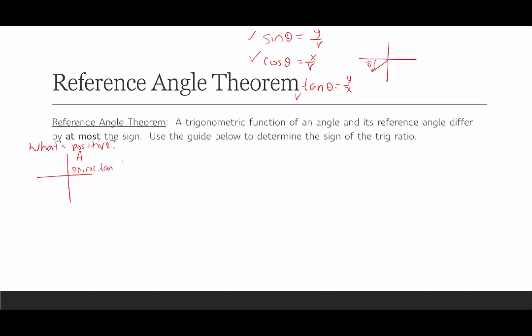Moving to quadrant 2: x is negative, y is positive. Sine is y over r, which is positive. Cosine is x over r, which is negative. Tangent is positive over negative, which is negative. So the only function that's positive in quadrant 2 is sine.